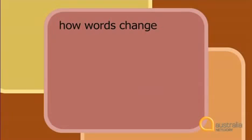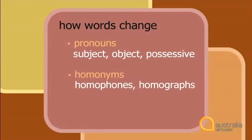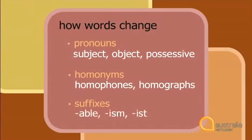So let's take a look back over what we've learned today. We've looked at how words change according to their function and context. First, we've looked at pronouns and the different forms they take: subject, object and possessive. Then we've talked about homonyms and the two different sorts: homophones and homographs. And we've finished today with a few different suffixes: -able, -ism and -ist.